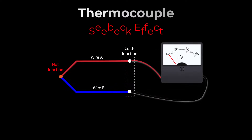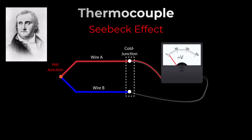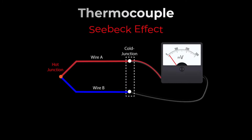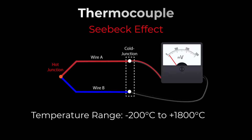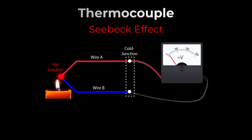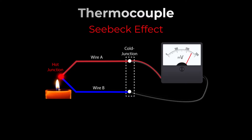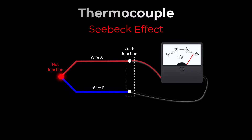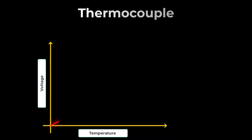It operates on the principle of the Seebeck effect, discovered by Thomas Johann Seebeck in the 19th century. Thermocouples can be used to measure temperatures ranging from minus 200 degrees Celsius to plus 1800 degrees Celsius. The Seebeck effect occurs when two different metals are joined at one end to form a junction, and this junction experiences a temperature difference — it generates a voltage that is directly proportional to that temperature difference.